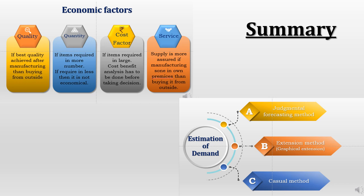To summarize this video: there are certain economic factors that govern the make or buy decision inside the hospital — quality, quantity, cost factor, and services. If the hospital takes the decision to manufacture, various methods are used to estimate demand: the judgmental forecasting method, the extension method (also called graphical extension), and the casual method, which uses regression analysis to calculate demand.